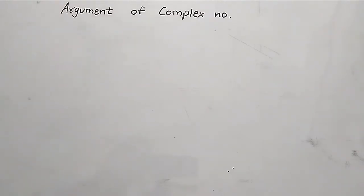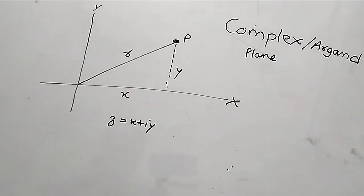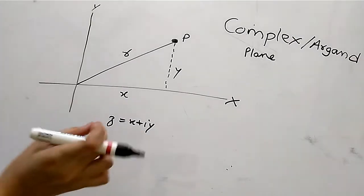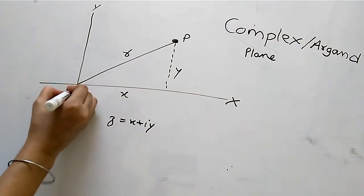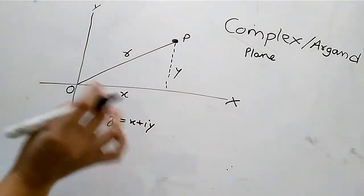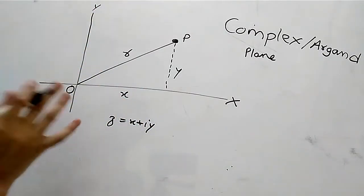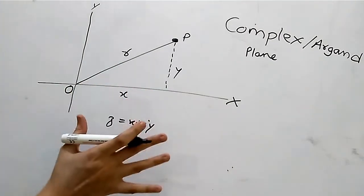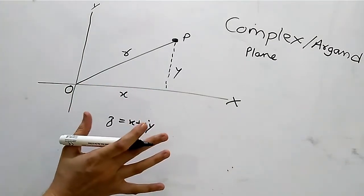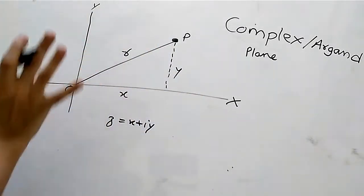So, this is the complex plane — also called the Argand plane. Here we have the X and Y axes. The real part of the complex number is represented on the X axis, and the imaginary part is on the Y axis.